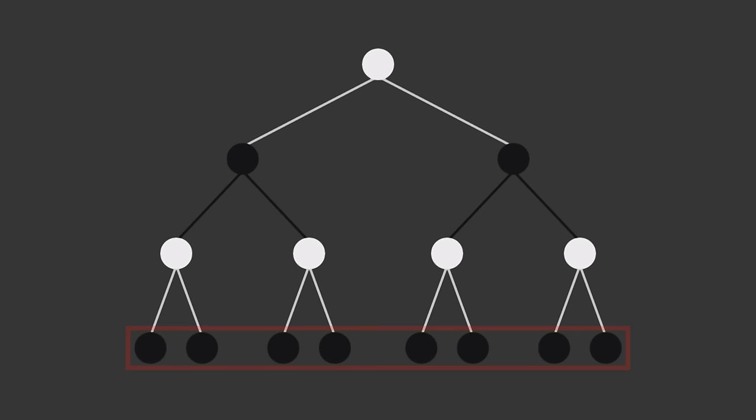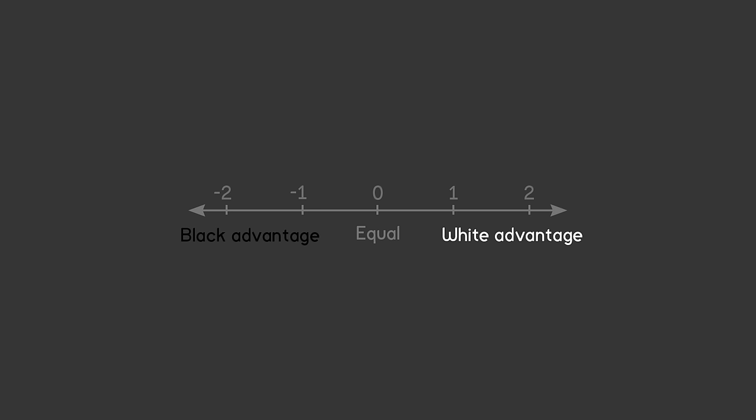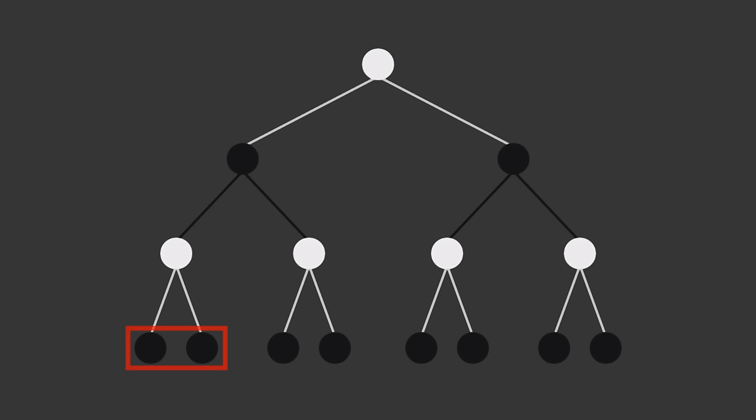Either way, at the end of the tree we now need to perform a static evaluation on these final positions. A static evaluation just means trying to estimate how good the position is for one side, without making any more moves. For example, a crude approach in chess would be to add up the values of the remaining white pieces and subtract from that the values of all the remaining black pieces. So large values would favour white, while small values would favour black. For this reason, white is always trying to maximise the evaluation, while black is trying to minimise it.